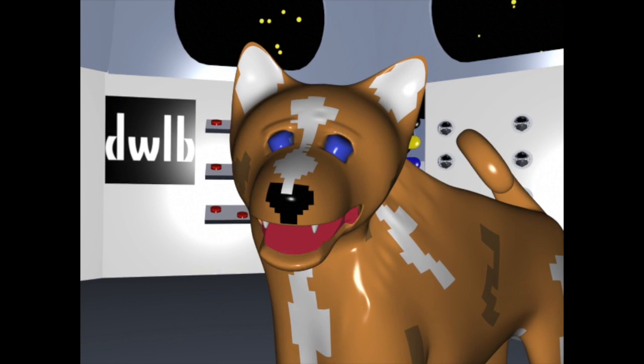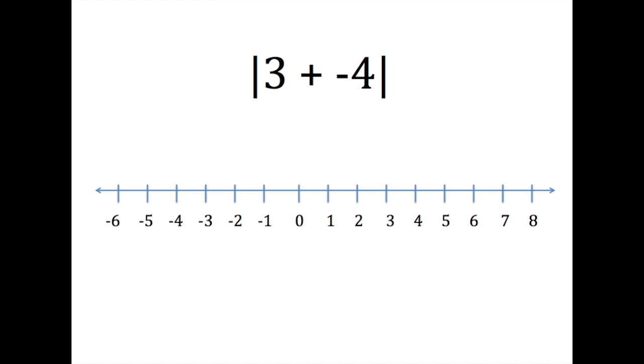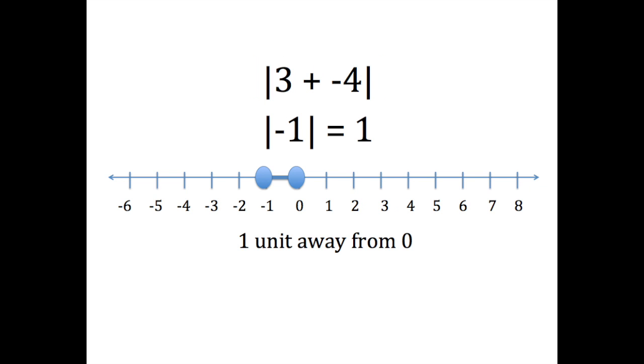What about equations with absolute values? In this case, we need to take the absolute value of an operation. So, we take three plus negative four and we get negative one. And then the absolute value of negative one is one.